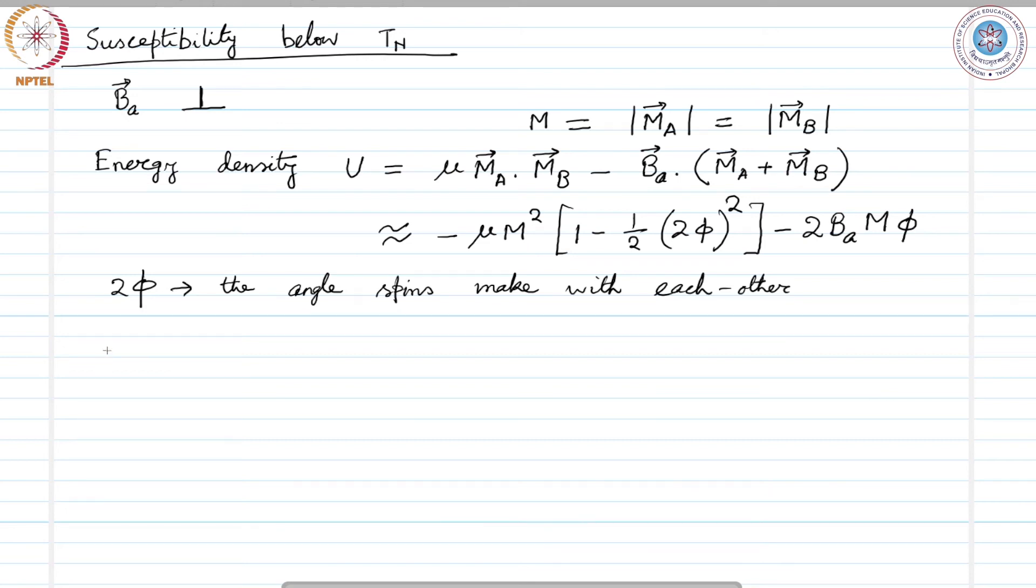The energy is minimum when du/dφ equals 0, which is 4μm²φ - 2B_A m. From this we find that φ equals B_A/(2μm). Then, the susceptibility, the perpendicular component of the susceptibility, becomes 2mφ/B_A equals 1/μ in CGS units.